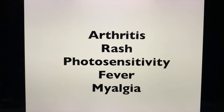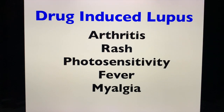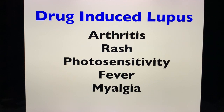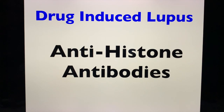Let's play around — what do we call this syndrome? Arthritis, rash, photosensitivity, fever, myalgia after intake of a drug. This is your famous drug-induced lupus. Drug-induced lupus or lupus-like syndrome is characterized by arthritis, rash, photosensitivity, fever, and myalgia, and is associated with anti-histone antibodies.